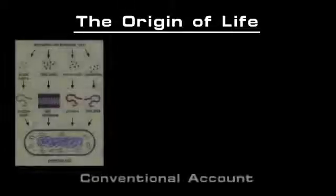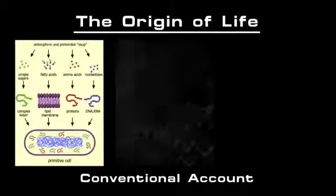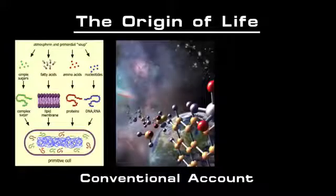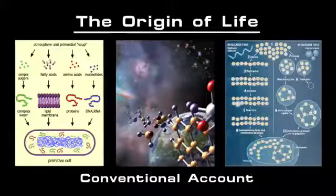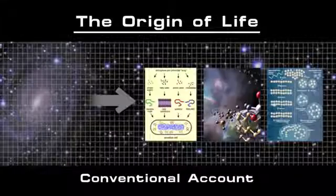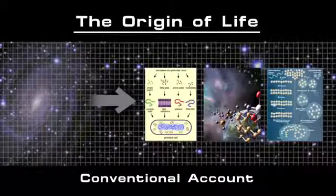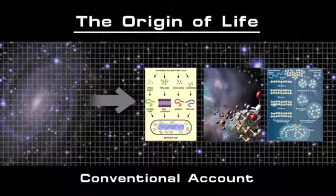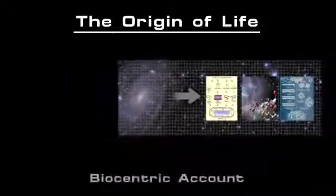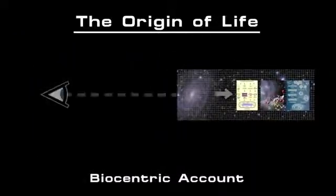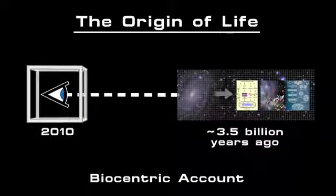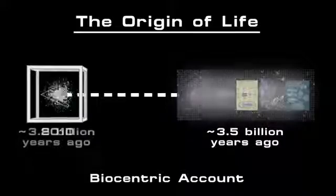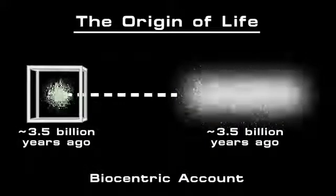In describing the origin of life, the conventional view requires a convergence of highly specific molecules and conditions, not the least of which is a universe allowing the existence of matter in the first place. The biocentric view says that these details are products of our modern perspective, and don't reflect what actually went on in the world of that first life form.